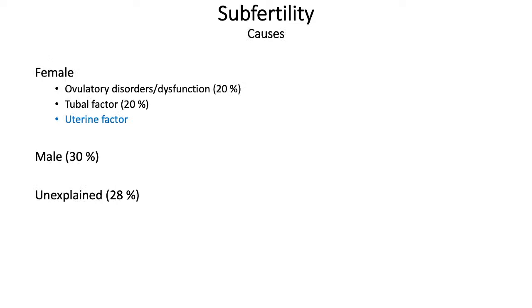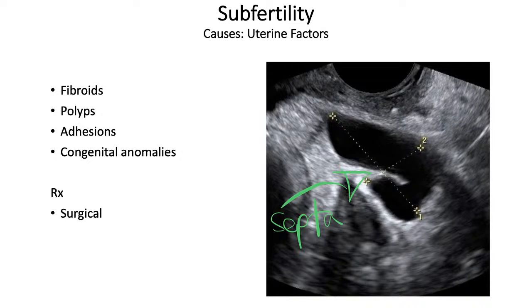Uterine factors tend to be more anatomical — including fibroids, polyps, adhesions, or congenital abnormalities. An ultrasound can show structures projecting into the uterine cavity, which would be negative for pregnancy implantation or growth. Treatment for uterine factors is normally surgical.